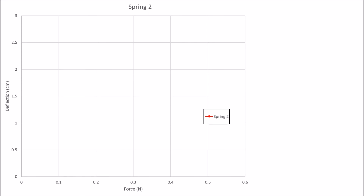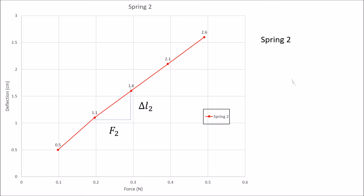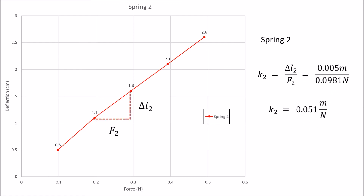For spring number 2, we will also graph the data and get the spring constant using the same formula: spring constant equals the change in length divided by the force. So for spring number 2, the spring constant is 0.051 meters per Newton.